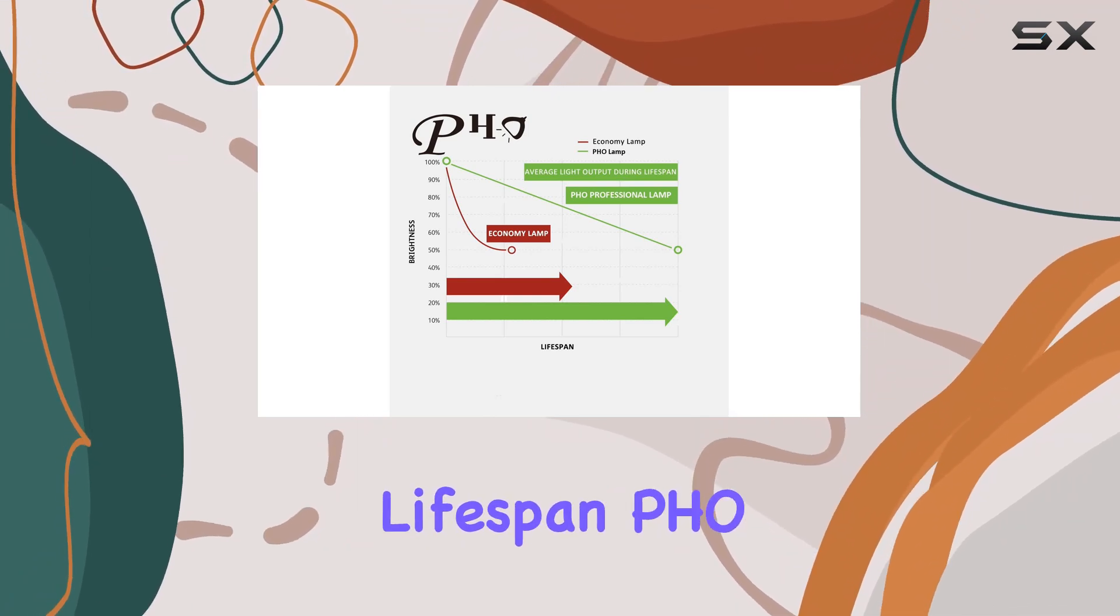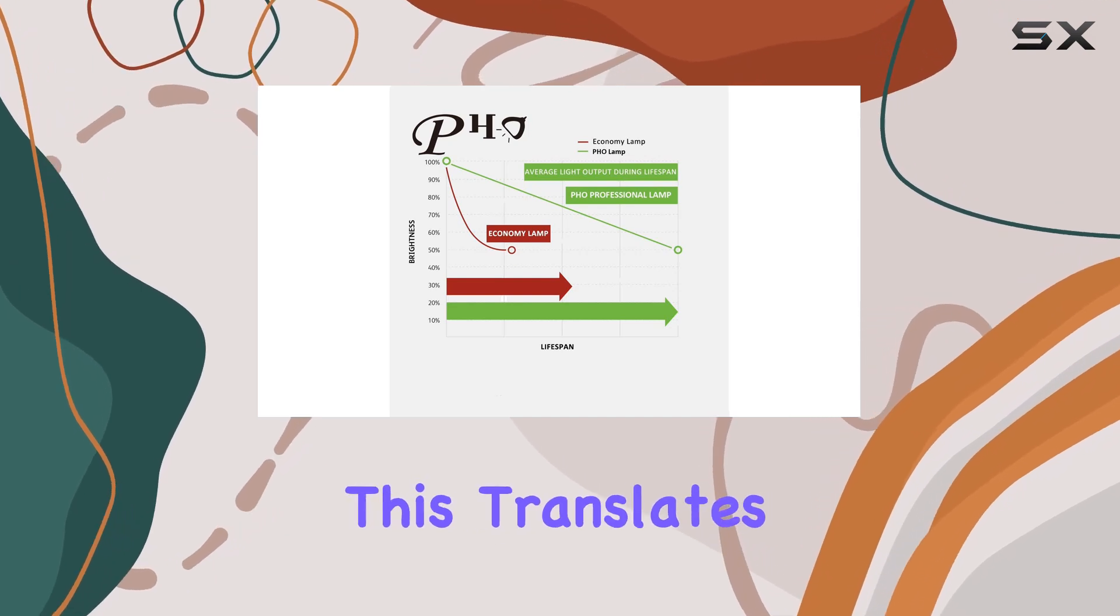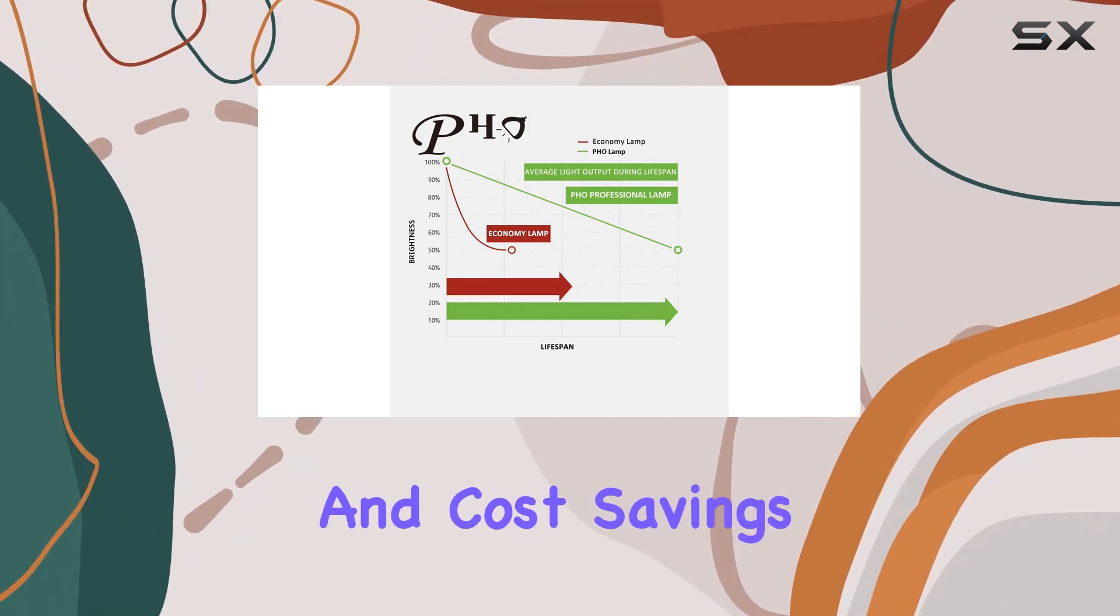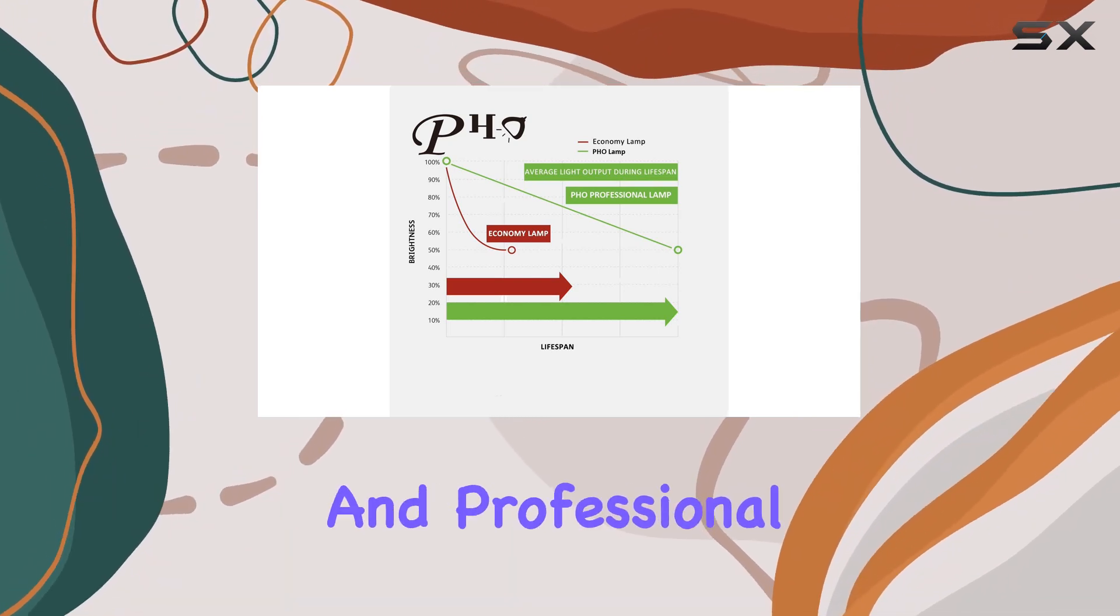Speaking of lifespan, PHO promises three times the longevity compared to economy lamps. This translates to fewer replacements and cost savings over time, making it a smart investment for both personal and professional use.